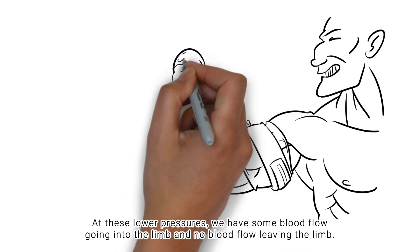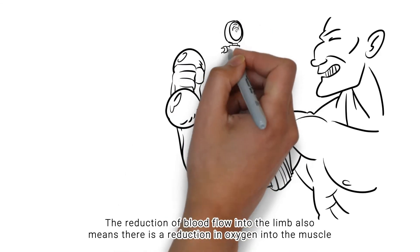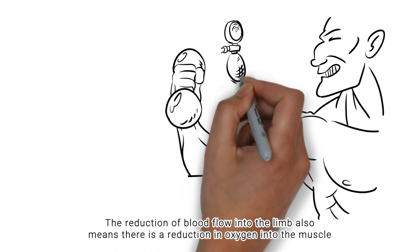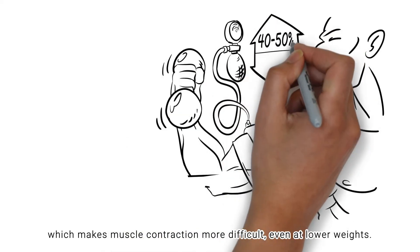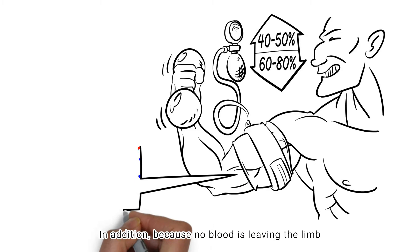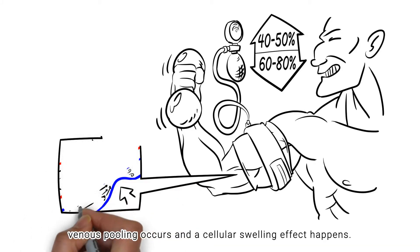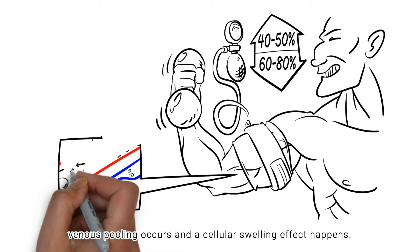The reduction of blood flow into the limb also means there is a reduction in oxygen into the muscle, which makes muscle contraction more difficult even at lower weights. In addition, because no blood flow is leaving the limb, venous pooling occurs and a cellular swelling effect happens.